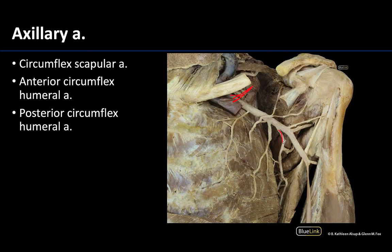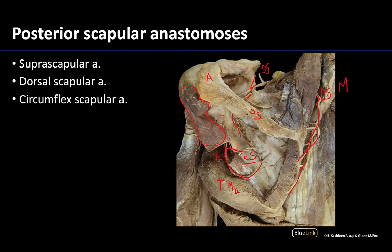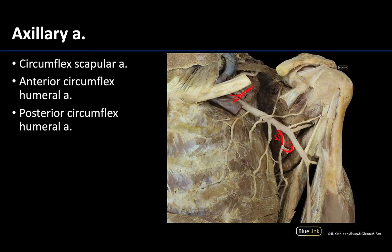One of the larger branches of the axillary artery is the subscapular artery, which we are not required to identify, but it gives off two important branches. One is the circumflex scapular artery, which loops toward the scapular region as we saw earlier. The other branch is the thoracodorsal artery, which supplies the latissimus dorsi muscle — that large superficial back muscle whose distal tendon extends toward the shoulder joint.